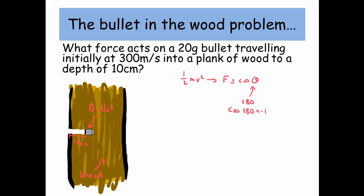And that angle, the angle between the two vectors force and displacement is 180 degrees because the bullet is traveling in one direction but the force is acting in the opposite direction, which is 180 degrees, and cos of 180 is minus 1.